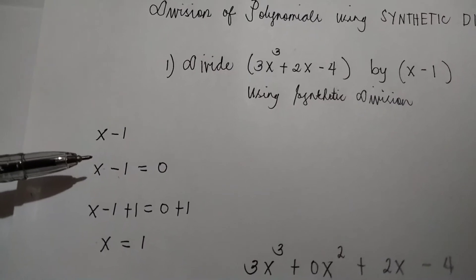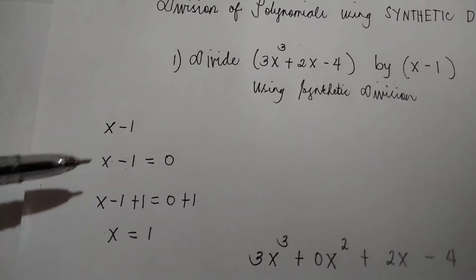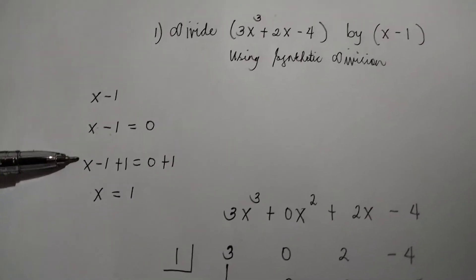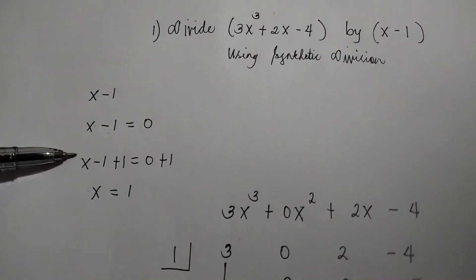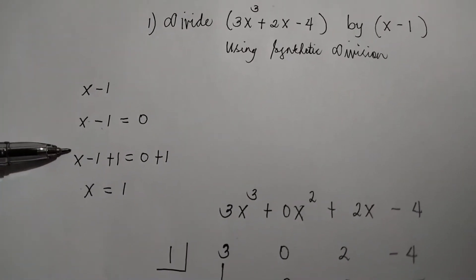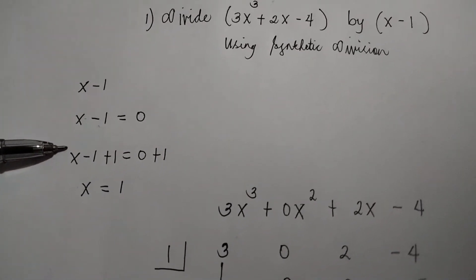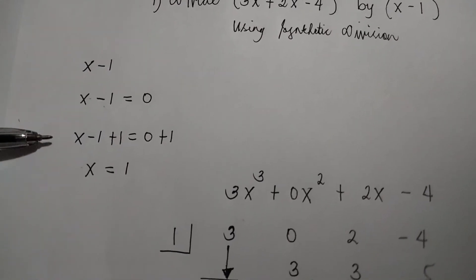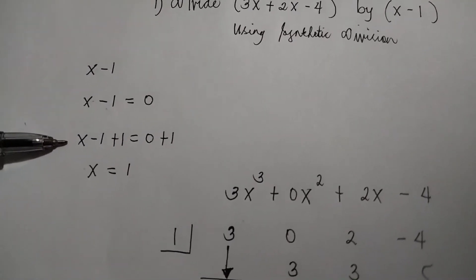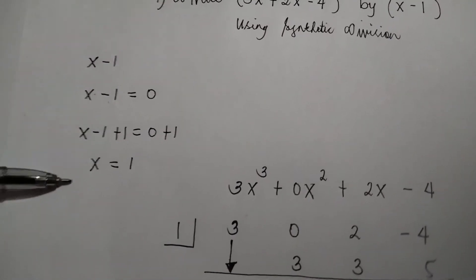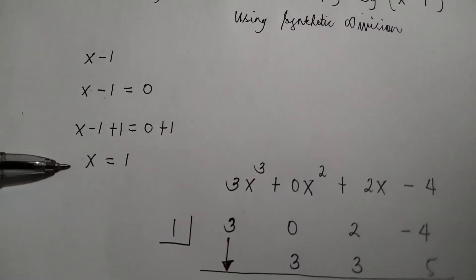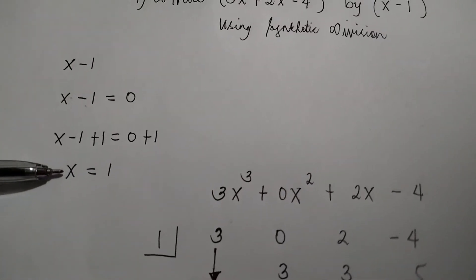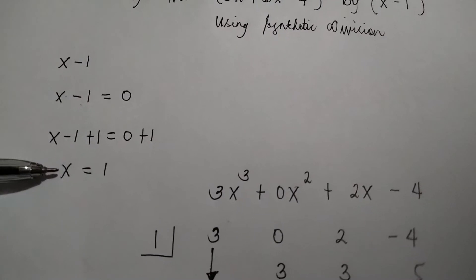You are going to add both sides by 1. That becomes x minus 1 plus 1 equals 0 plus 1. x minus 1 plus 1 is x, and 0 plus 1 is 1. So x equals 1.